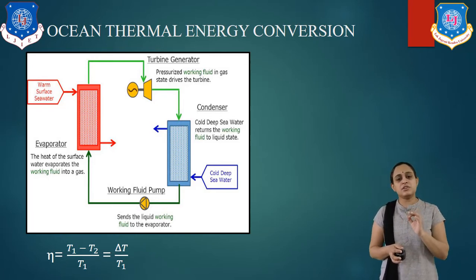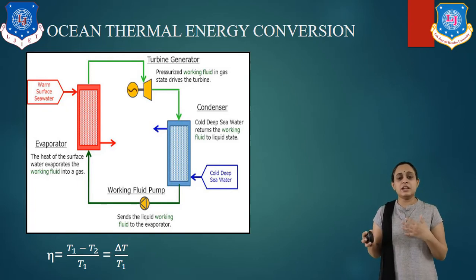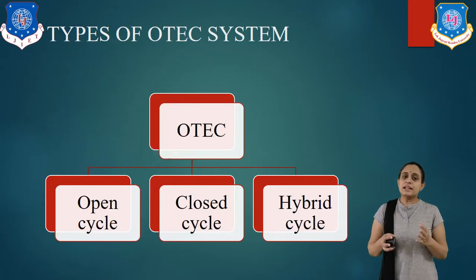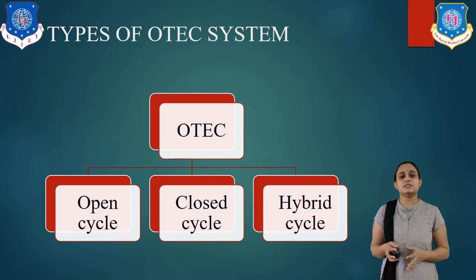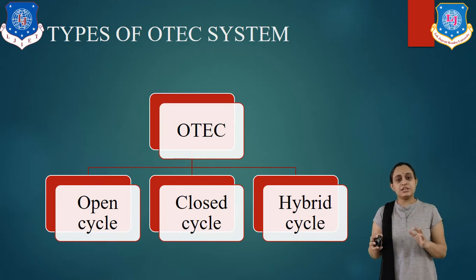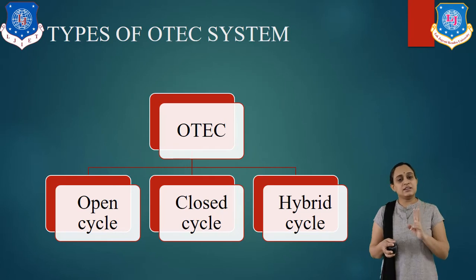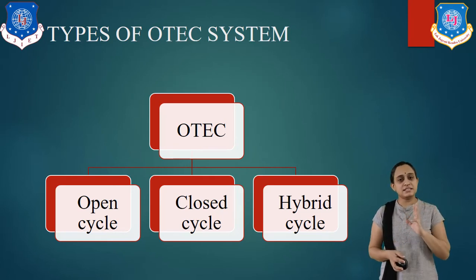There are basically three types of OTEC systems. The first is the open cycle, the second is the closed cycle, and the third is the hybrid cycle.